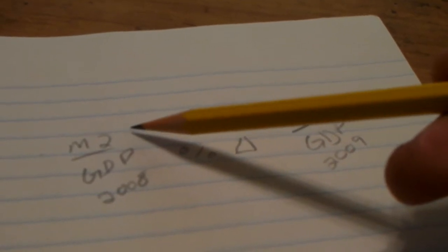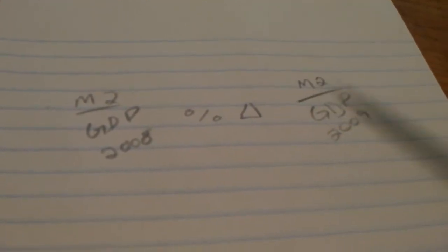M2 is all things money or that are substitutes for money. Gross domestic product is, of course, the oh-so-fancy replacement for gross national product.